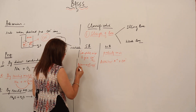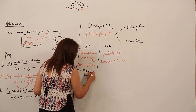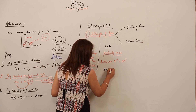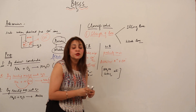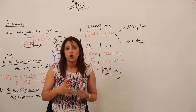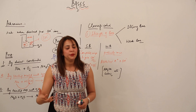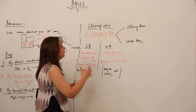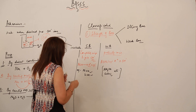Examples: alkali metal hydroxides like NaOH and KOH are strong bases. Ammonium hydroxide and calcium hydroxide are regarded as weak bases. All alkali metal hydroxides are strong bases, while alkaline earth metal hydroxides are not as strong as alkali metal hydroxides.